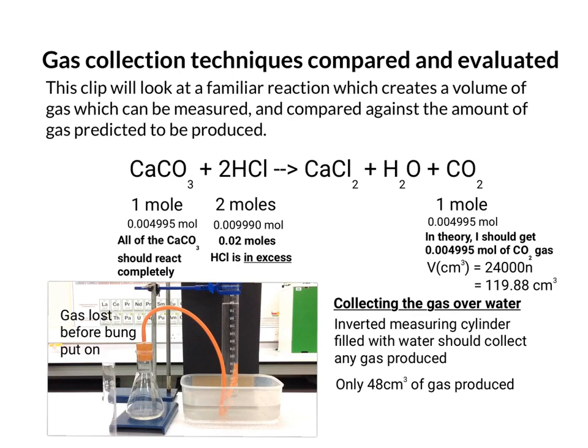So there's some gas lost before the bung is put on. You can see there was a time lag of a half a second or so. And carbon dioxide is actually slightly soluble in water. So some of it might have dissolved as it passes through the water. It's also possible that some gas might still be inside the flask and didn't make it into the measuring cylinder. So maybe this isn't the best technique to do the job with. Let's try another one.